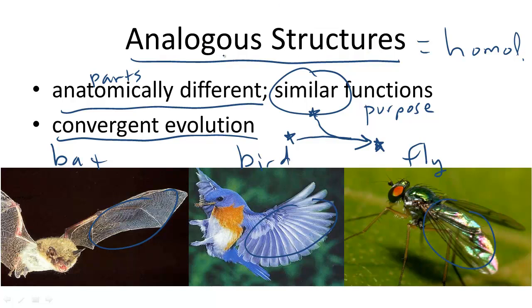So it's important to remember the difference between analogous structures and homologous structures. Analogous structures are anatomically different, whereas homologous structures are anatomically similar, such as the bones in a whale flipper and a human arm. However, analogous structures have similar purpose. They all fly, or they all use these structures to walk, or for the immune system, or whatnot.